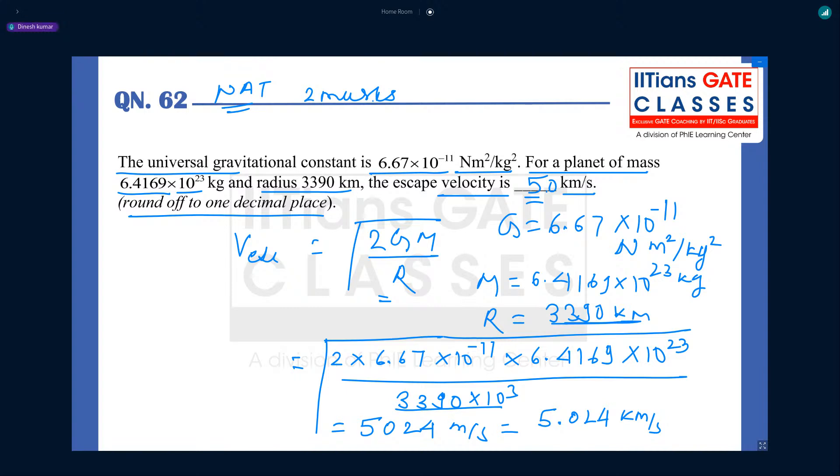When you substitute values it will be 2 into 6.67 into 10 to the power minus 11 into 6.4169 into 10 to the power 23 upon 3390. When you substitute all these you will get the answer as 5024 meter per second. But they asked the answer in kilometer per second and round off to one decimal place. So that means in kilometer per second it is 5.024 kilometer per second, and in round off it is 5.0 kilometer per second. Here many people, this is 10 to the power 3 in kilometer, so we need to substitute earth radius in meters, which is 3390 into 10 to the power 3 meters.